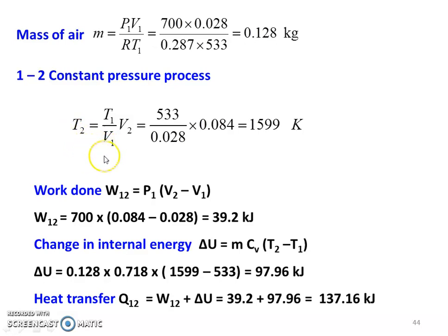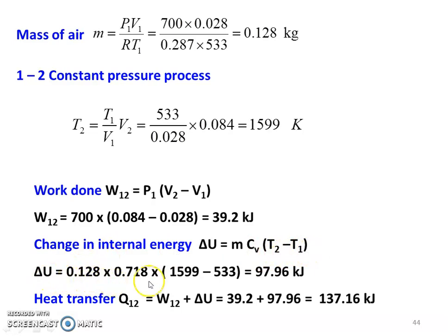First process — constant pressure: T2 = T1 × (V2/V1) = 533 × (0.084/0.028) = 1599 K. Work done W12 = P1(V2 − V1) = 700 × (0.084 − 0.028) = 39.2 kJ. Change in internal energy: ΔU = MCV(T2 − T1) = 0.128 × 0.718 × (1599 − 533) = 97.96 kJ. Heat transfer Q12 = W12 + ΔU = 39.2 + 97.96 = 137.16 kJ.